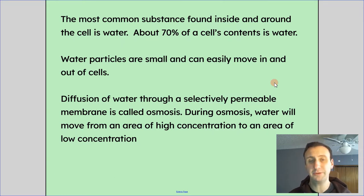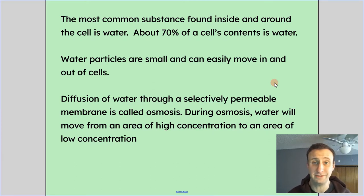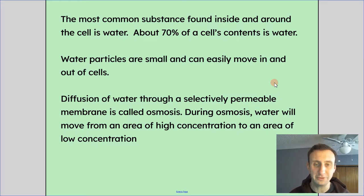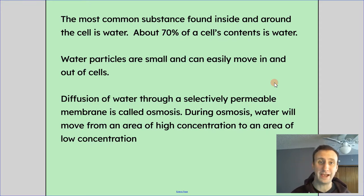The most common substance found inside and around the cell is water. About 70% of a cell's contents is, in fact, water. You can see why it's important that we have a special kind of name for water, because it's so critical to the function and makeup of the cell. Water particles are small and can easily move in and out of cells — they can just go through the membrane. In fact, cell membranes have special channels for water to go through.